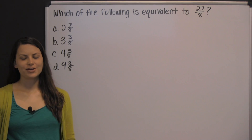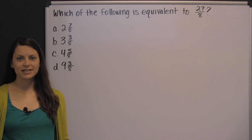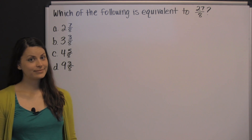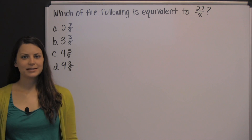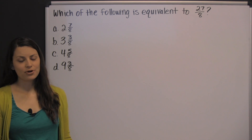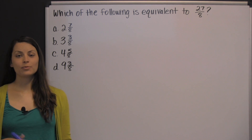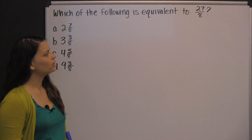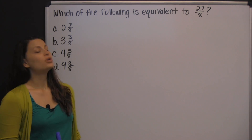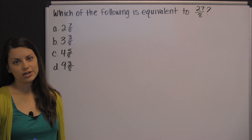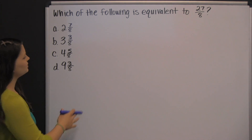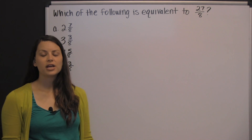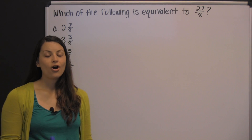One of the sections on the Accuplacer exam is the arithmetic section. On this section you'll need to use scratch paper, not a calculator. Here's one example of the type of problem you'll see: which of the following is equivalent to twenty-seven-eighths? Twenty-seven-eighths is an improper fraction, and when you look at the answer choices, you can see they're all mixed numbers. To turn an improper fraction into a mixed number, all you have to do is divide.